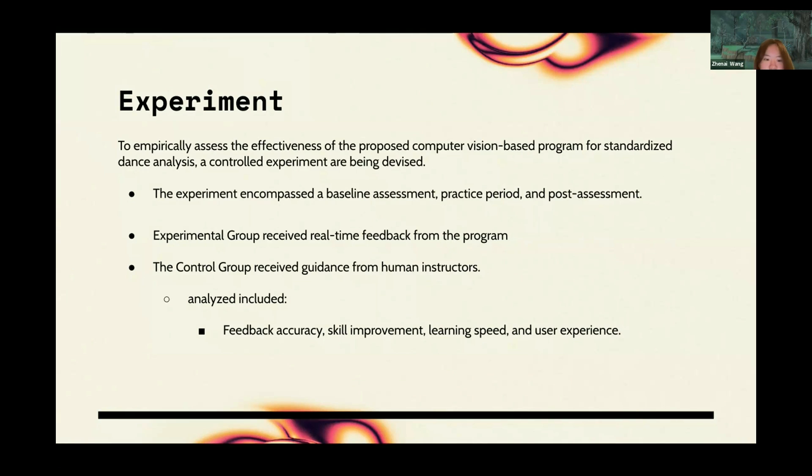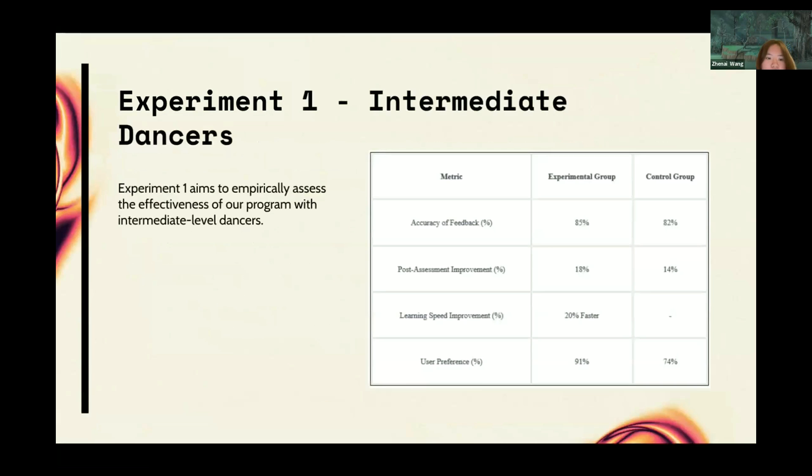The metrics analyzed include feedback accuracy, skill improvement, learning speed, and user experience. The experimental results aimed to empirically assess effectiveness with intermediate level dancers. We compared real-time feedback from our program to human instructors. The results showed a significant 18% skill improvement in the experimental group compared to the control group's 14%. Error corrections were also 20% faster, highlighting the program's efficiency.